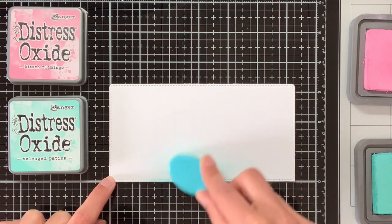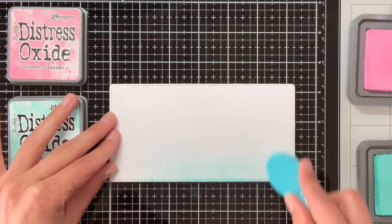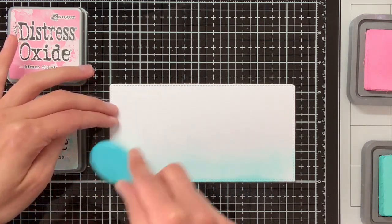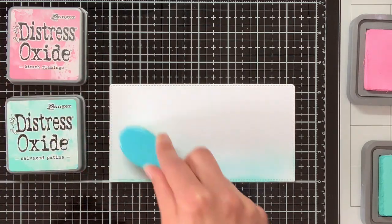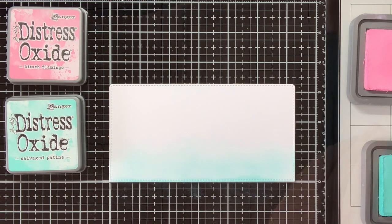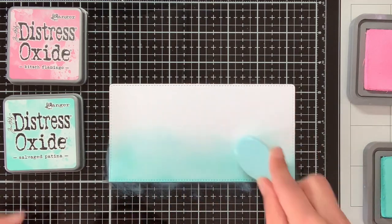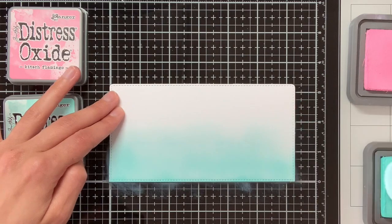With the die cut set I have die cut this background panel which I will be decorating first. I'm going to create a gradient with Distress Oxide Salvaged Patina and Kitsch Flamingo. These are my two favorite oxide inks at the moment and I also like what color you get when you mix them together.